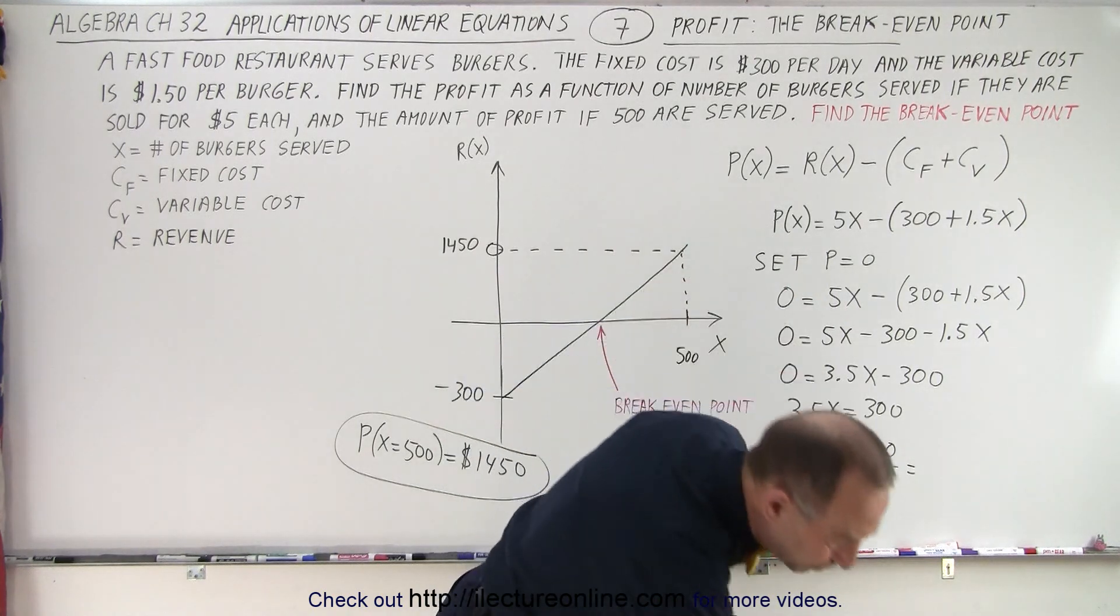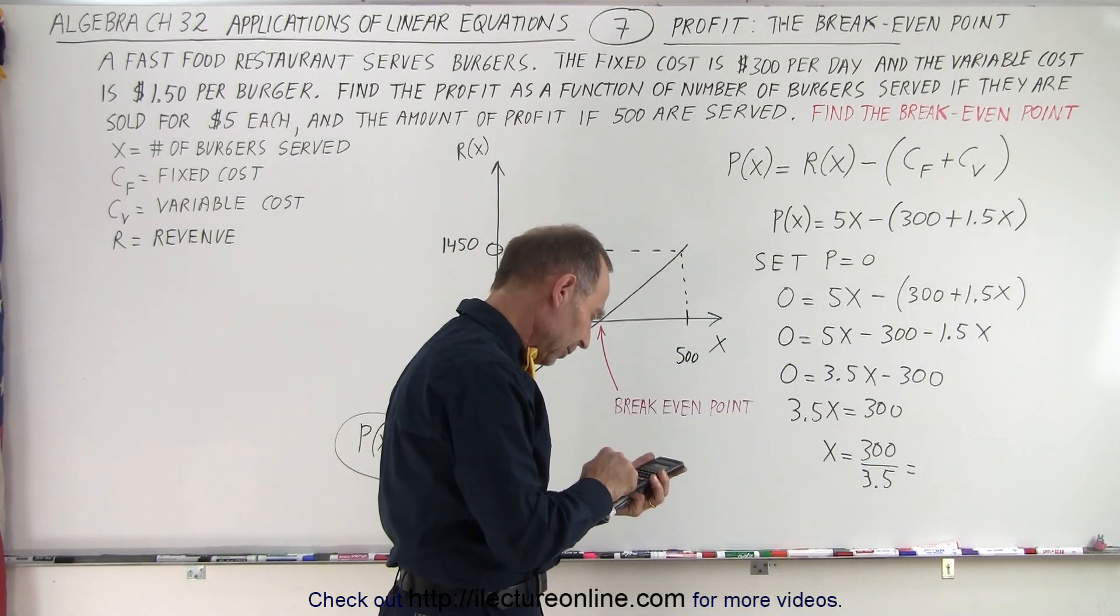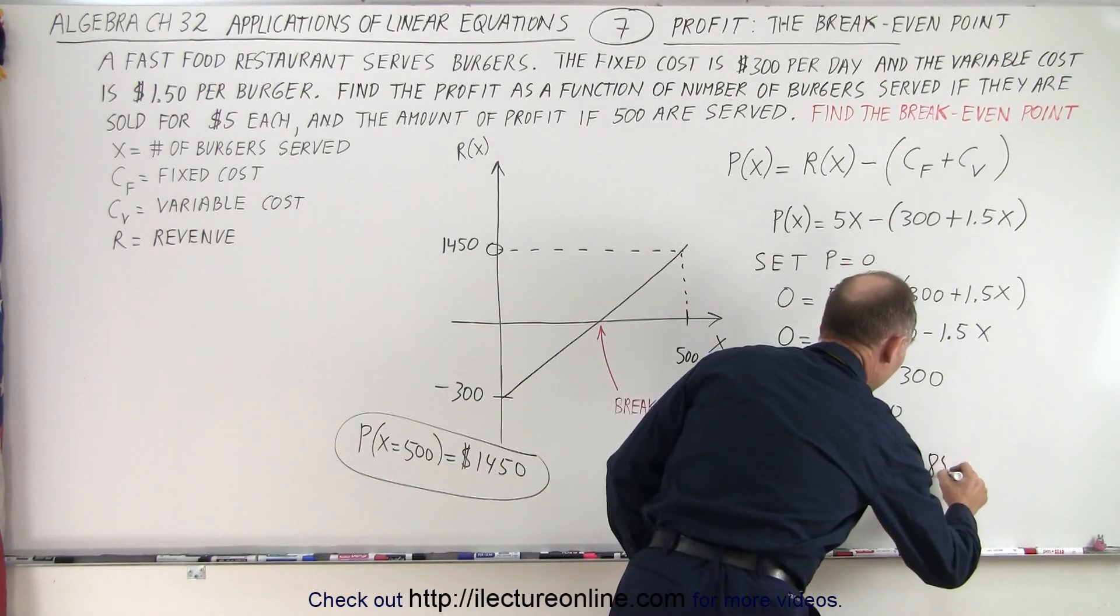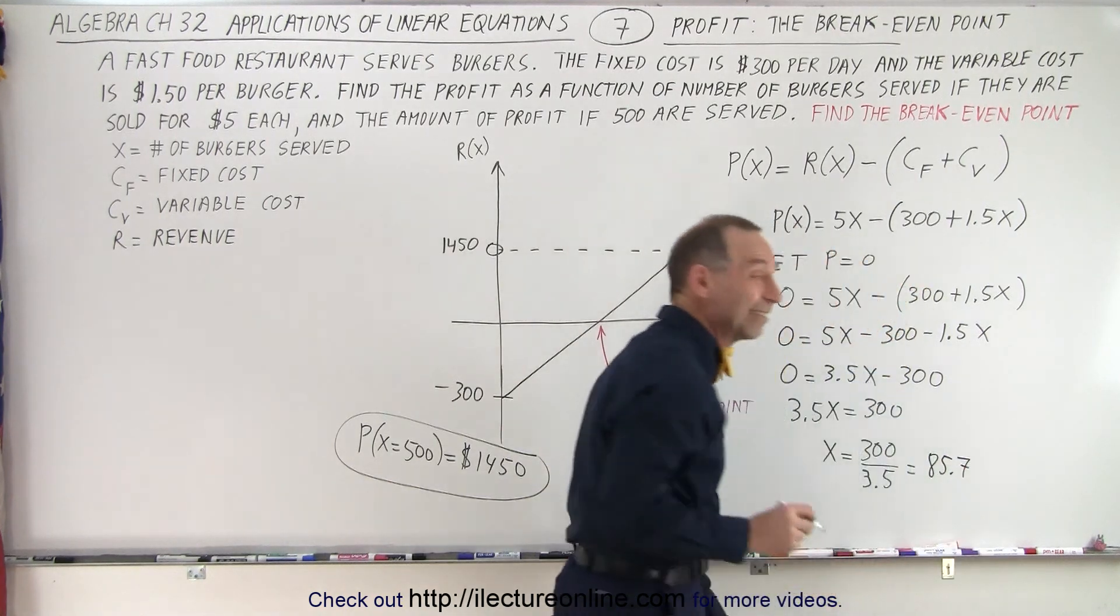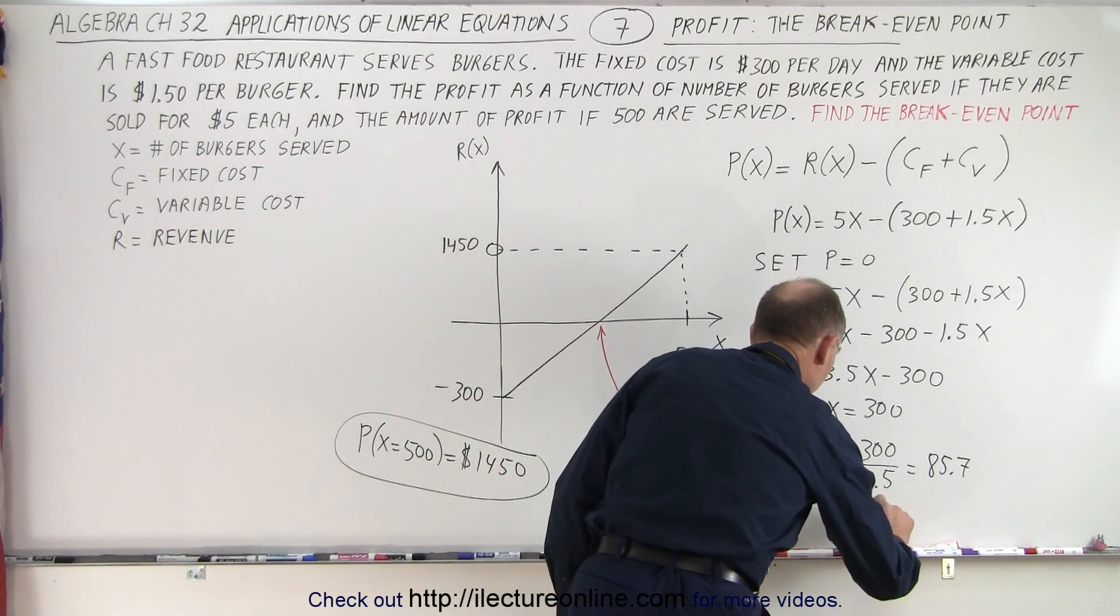So what is that equal to? So we have 300 divided by 3.5, we get 85.7. Of course we can't sell 0.7 of a burger, so that means that x must be equal to 86.